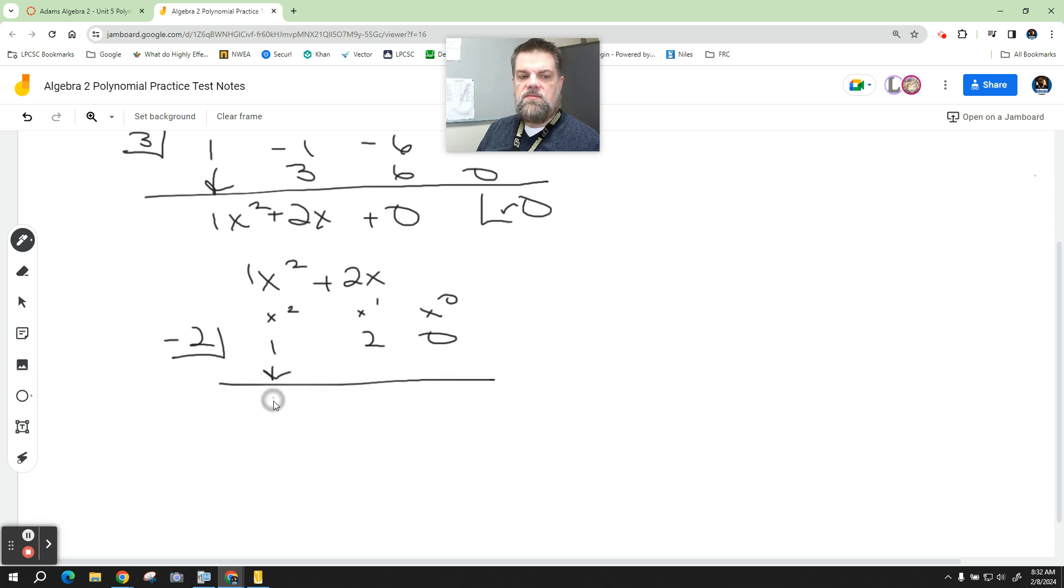Drop down the 1. 1 times negative 2 is negative 2. Add those up, I get 0. 0 times negative 2 is 0. 0 plus 0 is 0. I have a remainder of 0. So this becomes 1x plus 0.